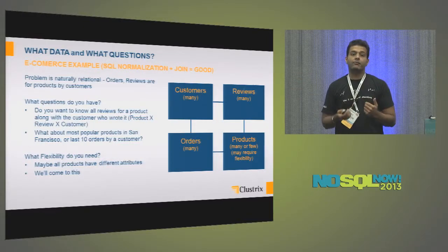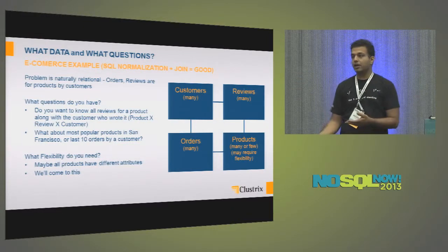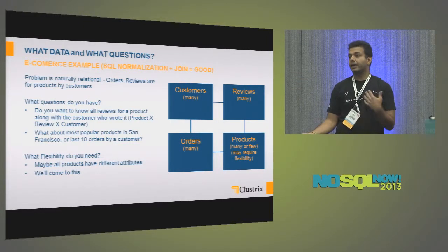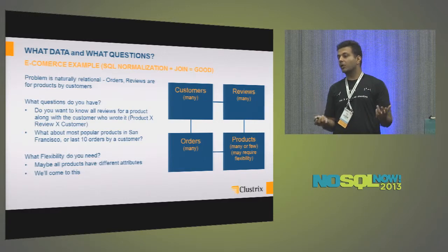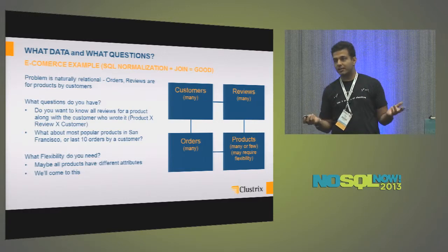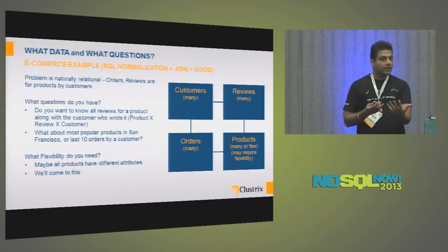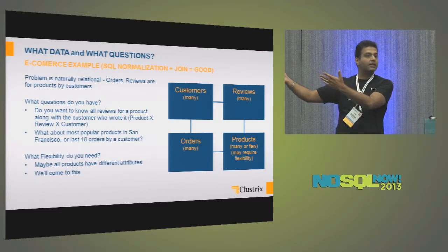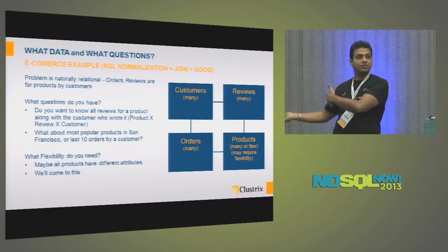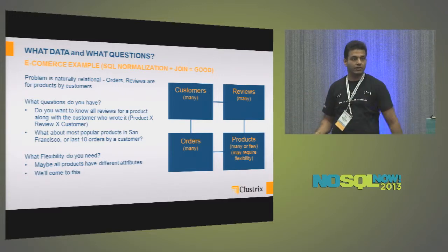On the other hand, in some cases the product catalog can have products which are very different. You might have flowers and you might have a car, and they might not share that many characteristics. So use Mongo — it works really well — or another document store. That's the right mix. Pretty much nobody uses Mongo for the other part, and it might not make sense to use relational for that part.